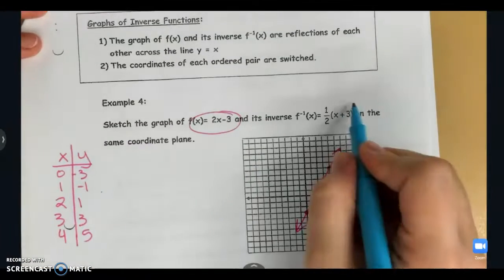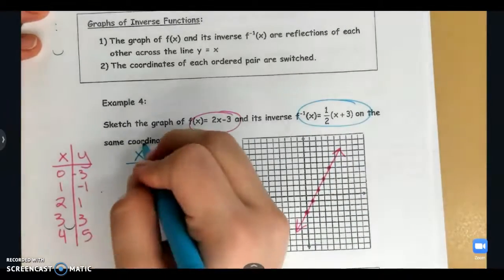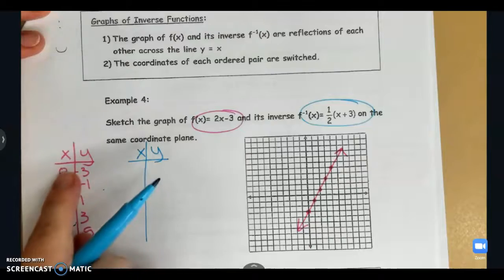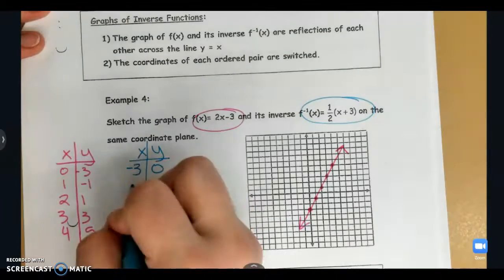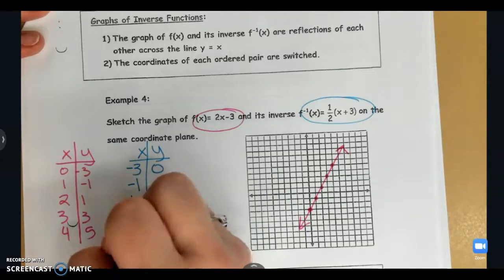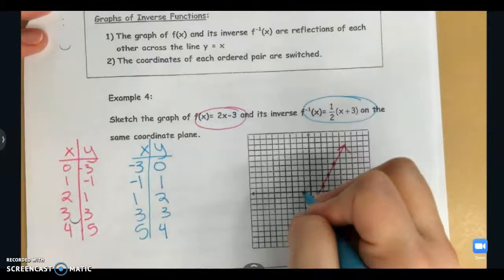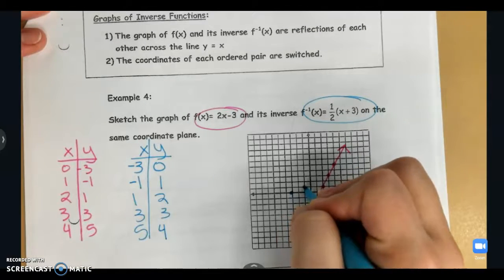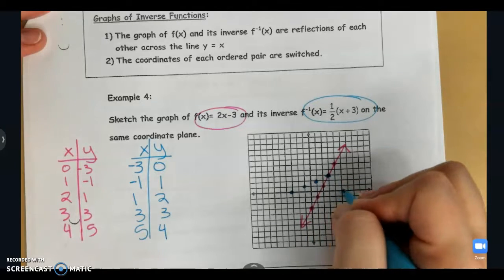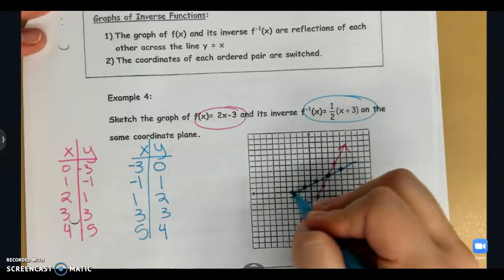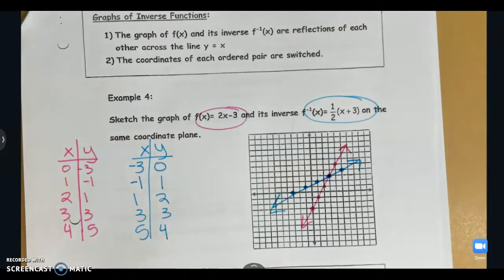Then I'm going to plot my inverse in blue here. My inverse is just going to be flipping the x and the y values. So instead of 0 negative 3, I'm going to have negative 3, 0. 1 negative 1 will be negative 1 positive 1, and so on. We're flipping the x and the y values and then I just plot those. And there is my inverse. We just swap the x and the y values.